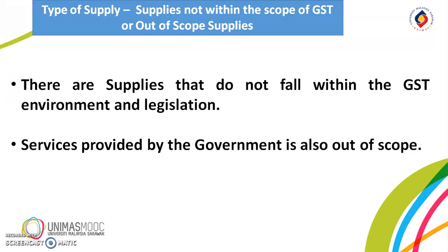Fourth is the supplies not within the scope of GST, or out-of-scope supplies. Supplies that do not fall within the GST environment and legislation include those which are non-business in nature, sales of goods and services outside Malaysia to another location outside Malaysia, employment income, and penalties.